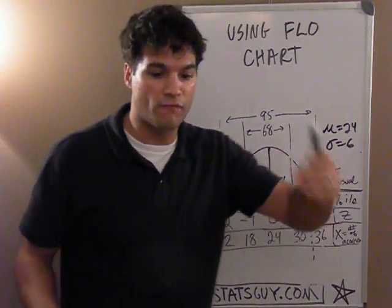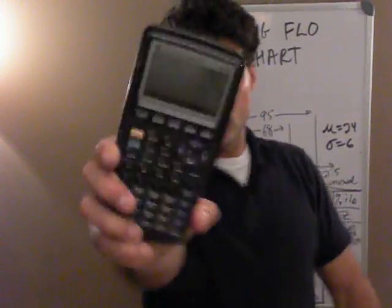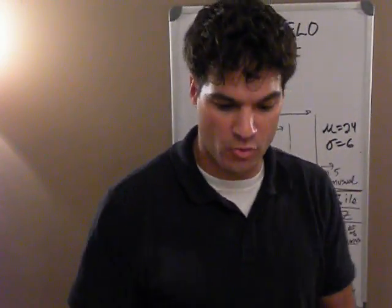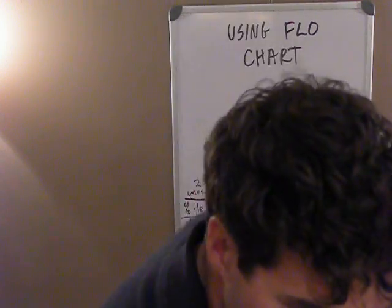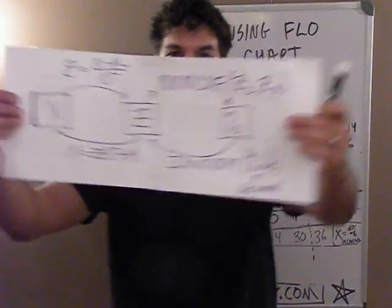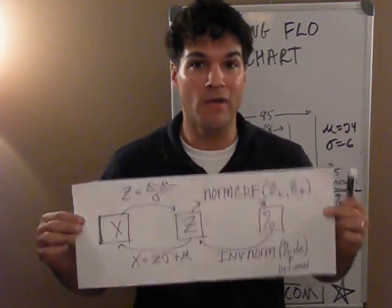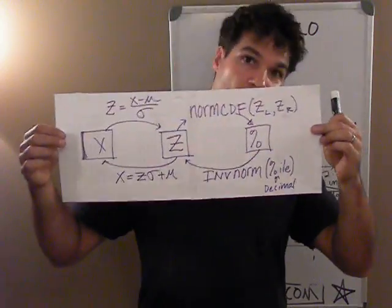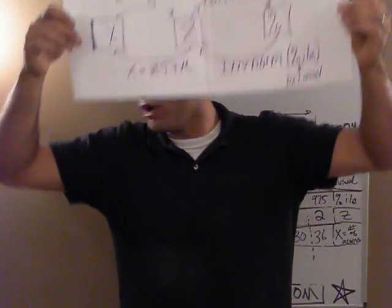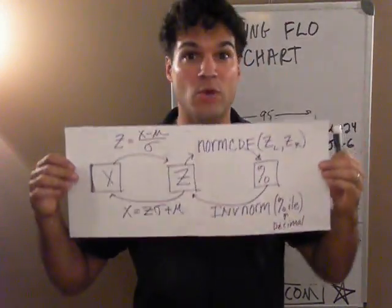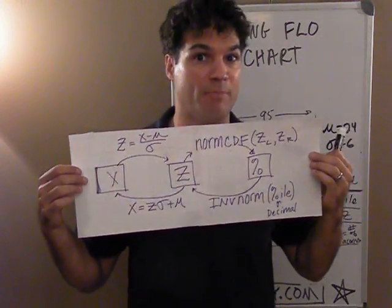Alright, here we go. We're going to use the flow chart to actually do some calculations, use our calculator to answer some questions. I'll write the questions up, we'll go this way for a couple, along the bottom for a couple, and then a between one. So we'll do five examples.